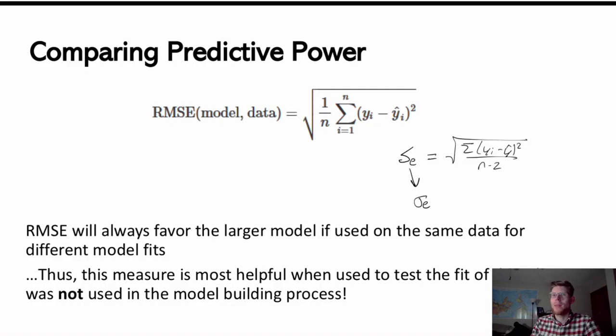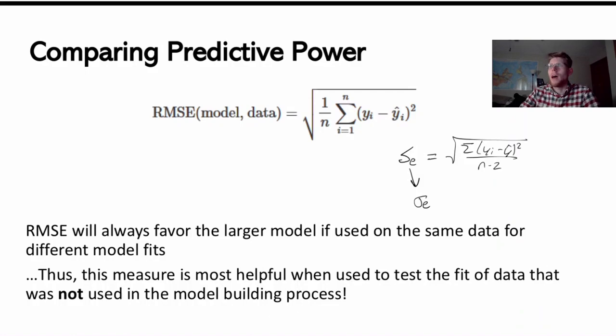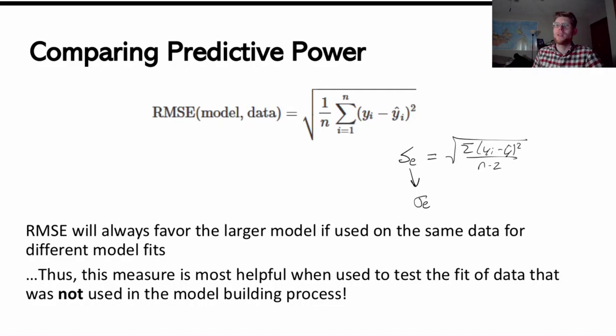That's why the RMSE is probably not a great measure for comparing forms if I'm just using it on the same data and trying different options, because it's always just going to favor the biggest model. That's why we might use what's called test data. This measure is going to be most helpful when used to test the fit of the data on data that was not used in the model fitting process. We basically test it out to see how well it fits on this new set of data.